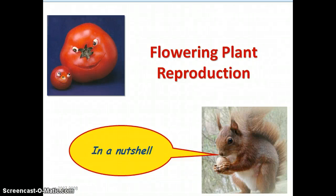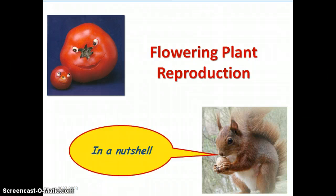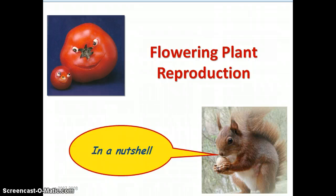This is the beginning of our Unit 5 on Plant Physiology, and the first chapter we're looking at is focusing on angiosperm, or flowering plant, reproduction, which is the major portion of any organism's physiology — how it is going to have successful reproduction.